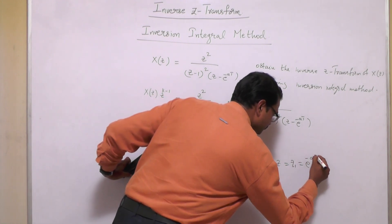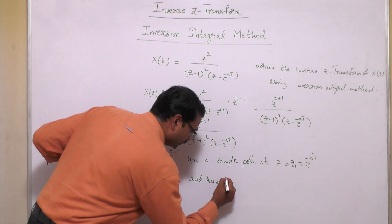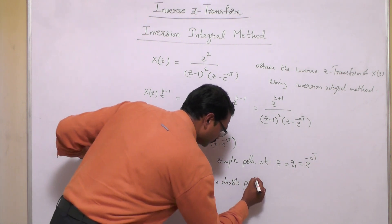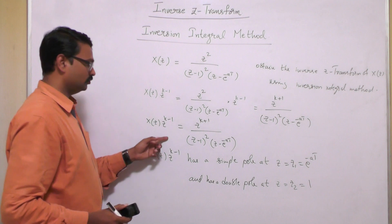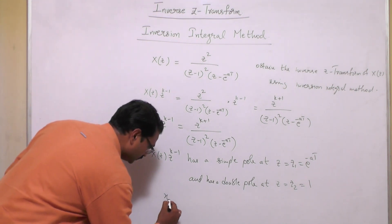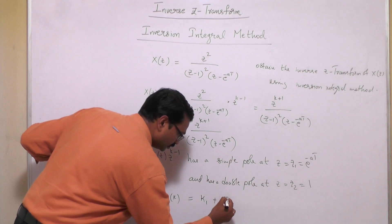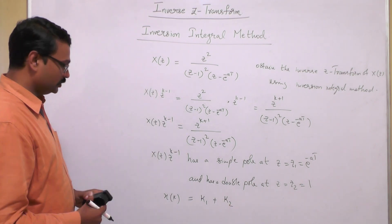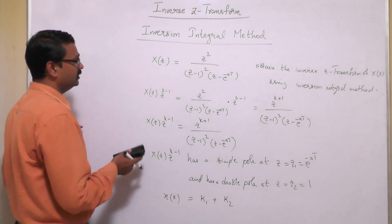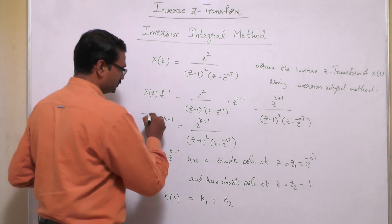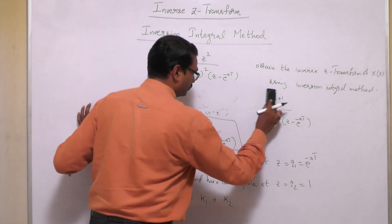X(Z)·Z^(k-1) has a simple pole at Z1 = e^(-aT) and a double pole at Z2 = 1. Therefore the solution X(k) will again have K1 + K2, one residue for each pole type. We need to find K1 and K2 using the appropriate residue formulas.